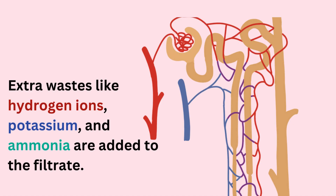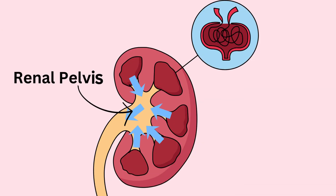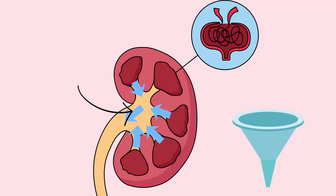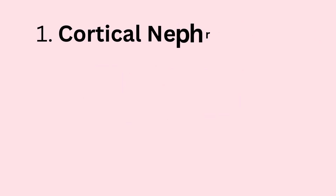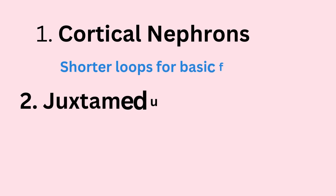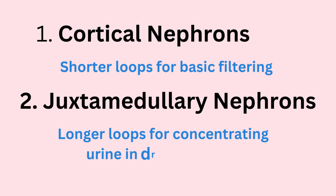By the end, concentrated urine collects in the renal pelvis, a funnel-shaped area. There are two types of nephrons: cortical, with shorter loops for basic filtering, and juxtamedullary, with longer loops for concentrating urine in dry conditions.